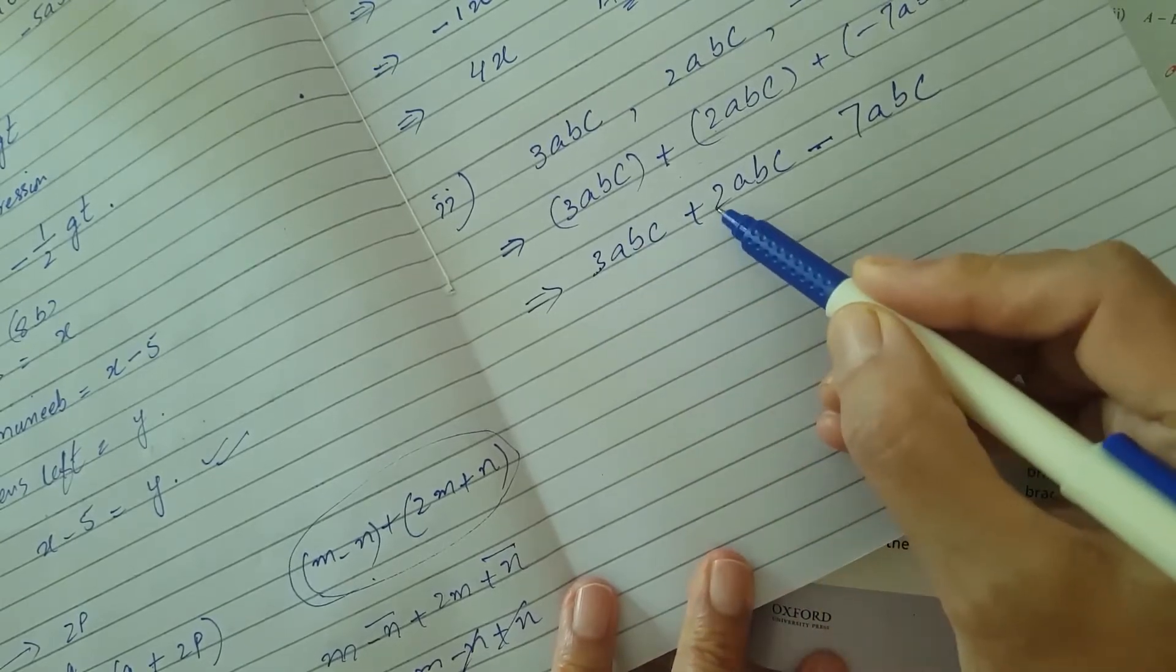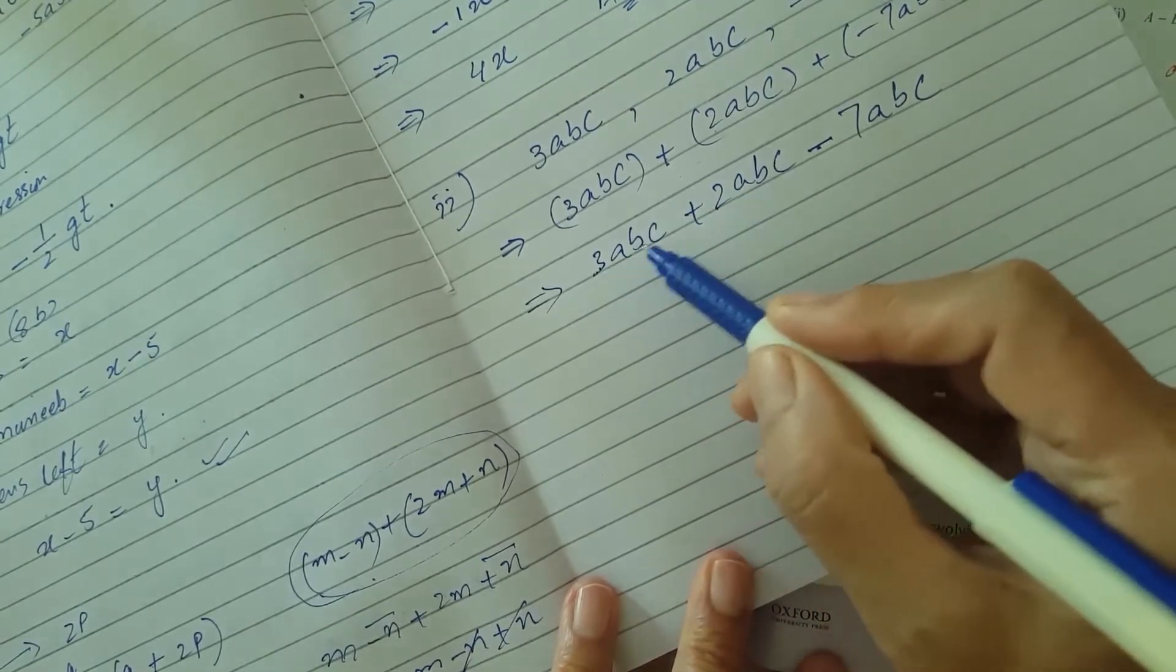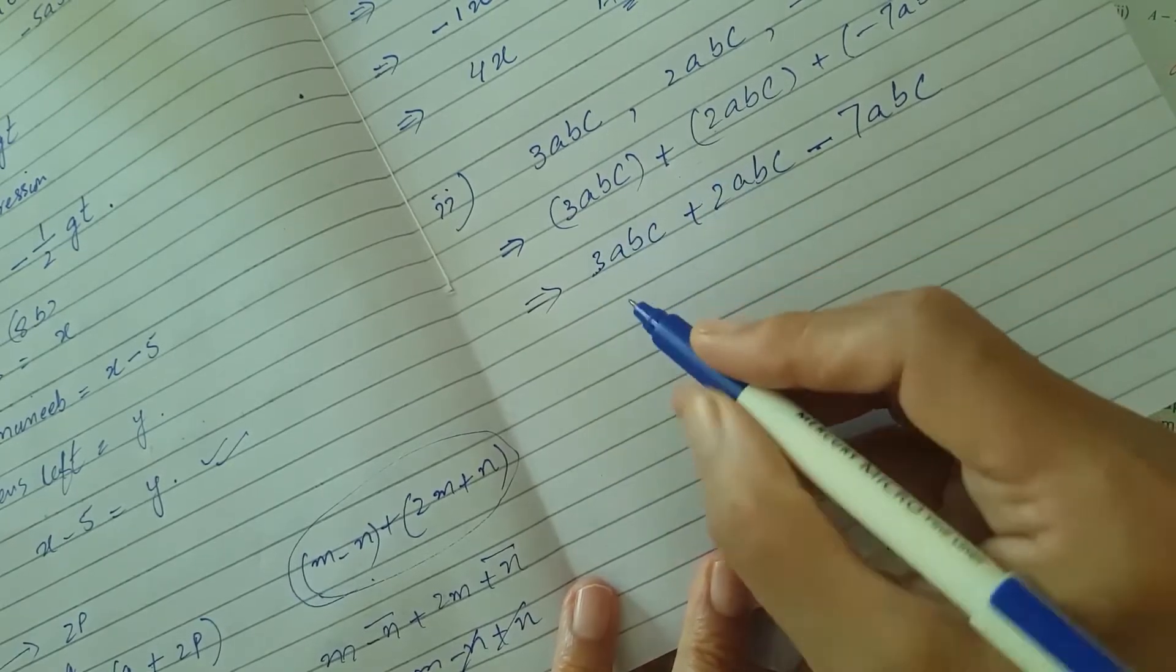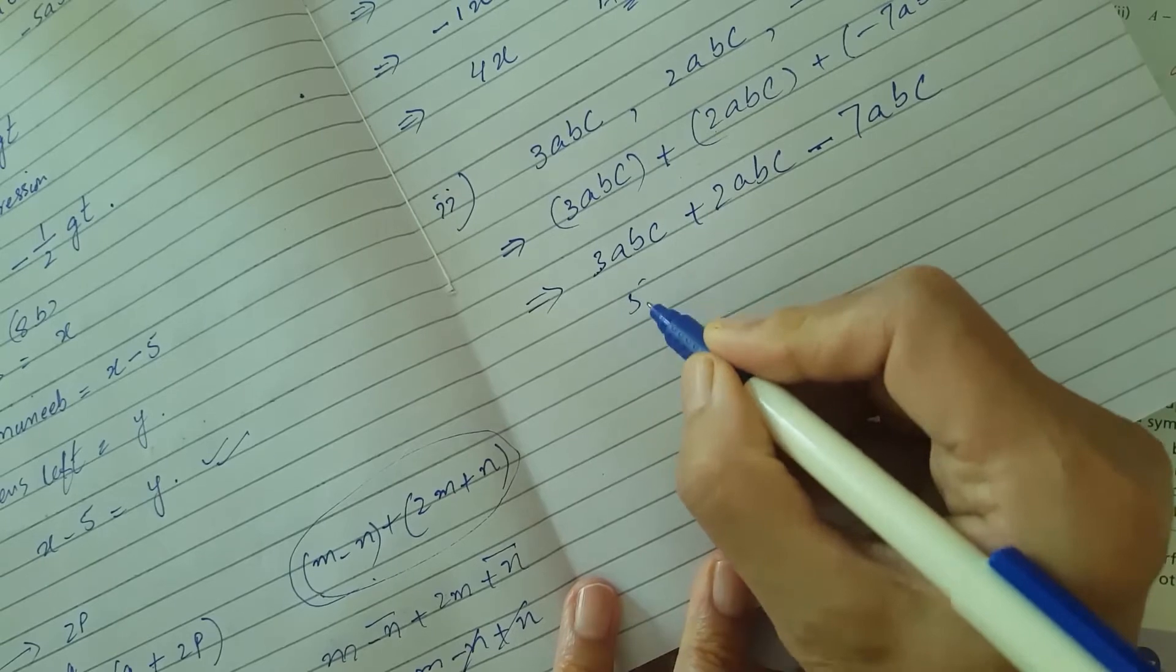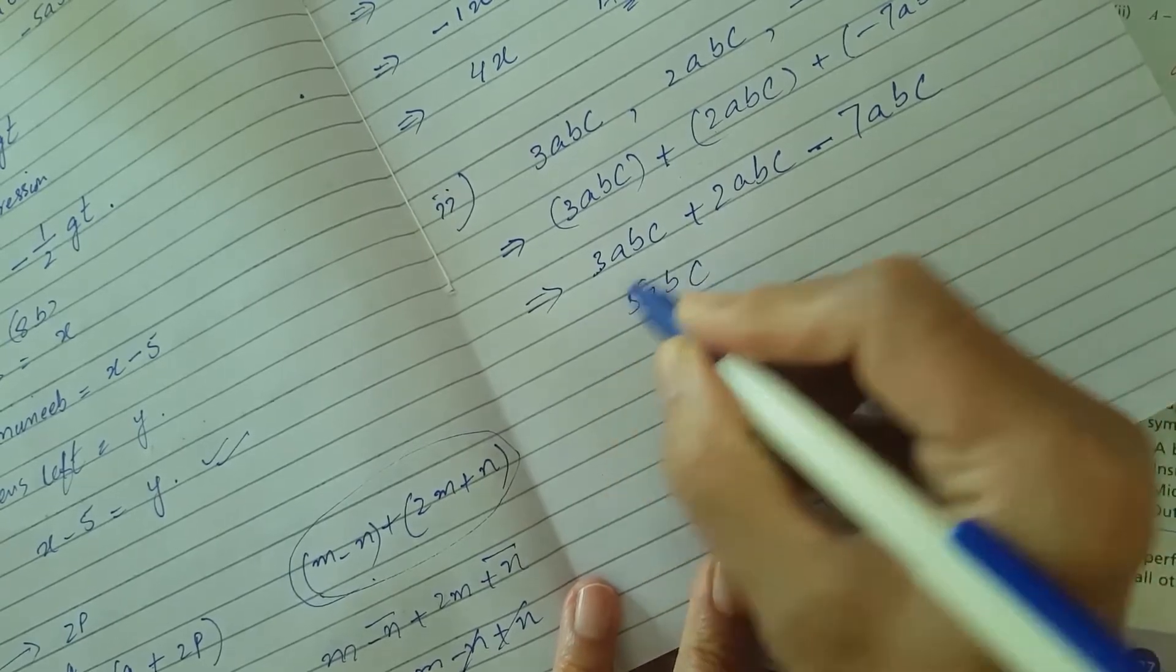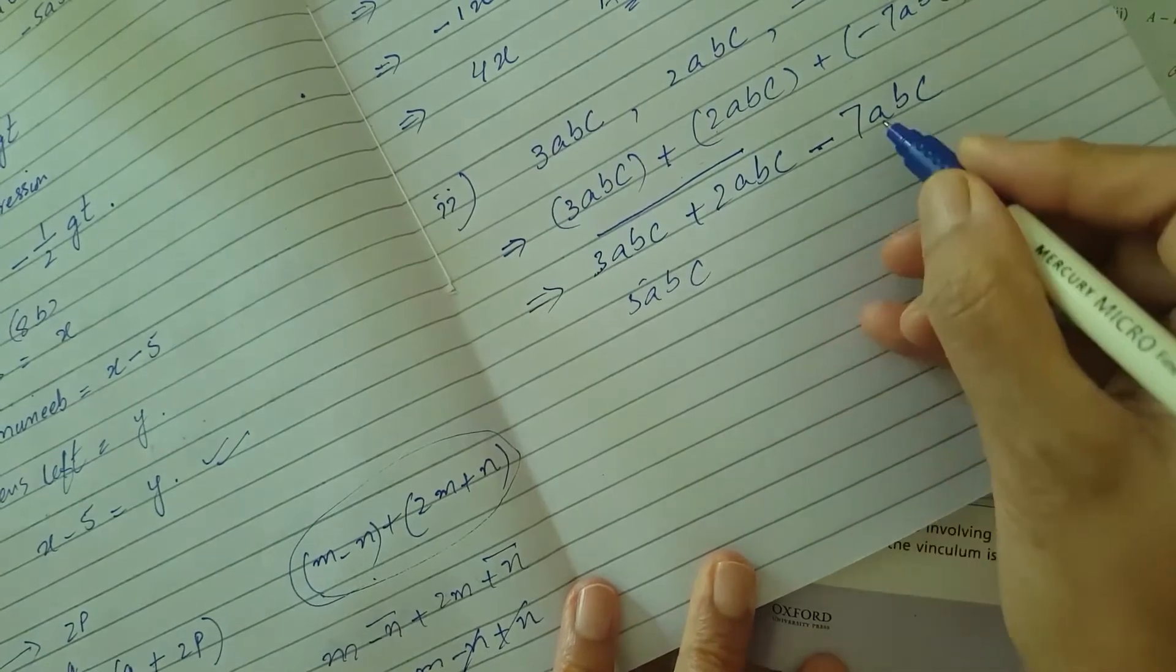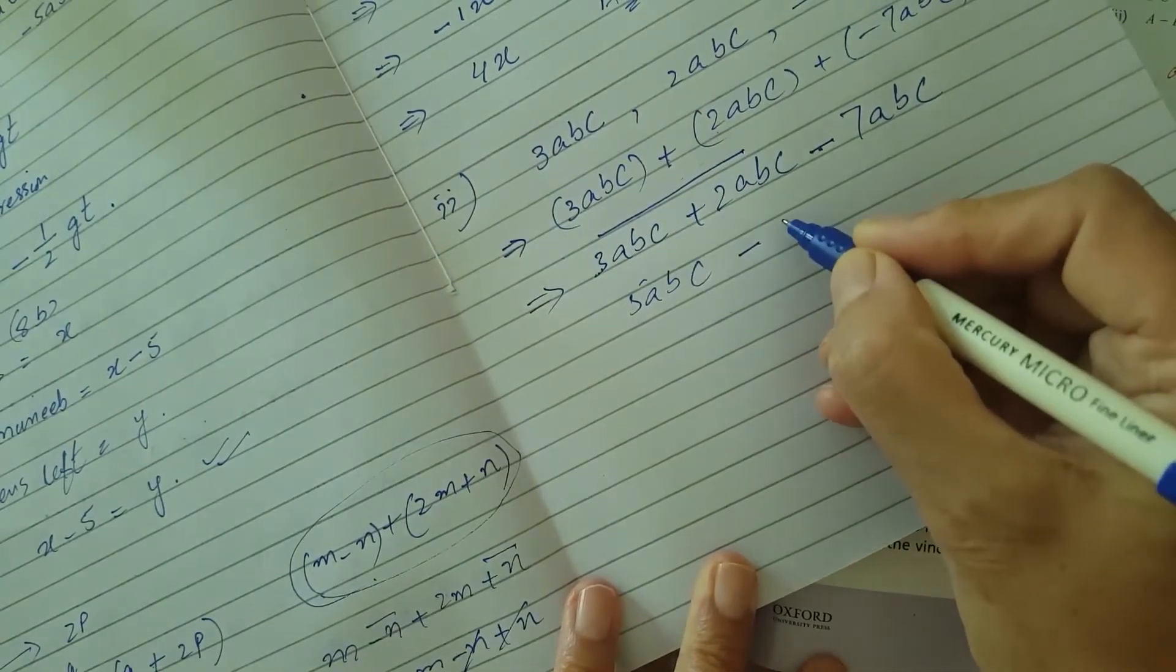Now first we will add these two terms, these two expressions having coefficient 3 and coefficient 2. So 3ABC into 2ABC gives you how many ABC? 3 plus 2 is 5. 5ABC.